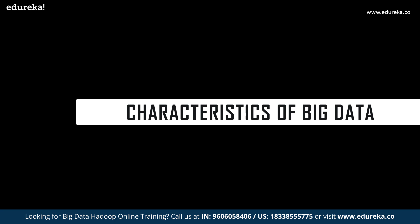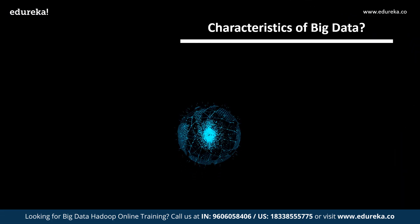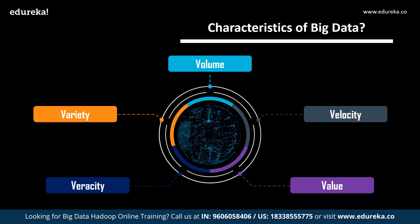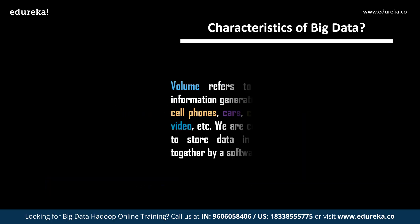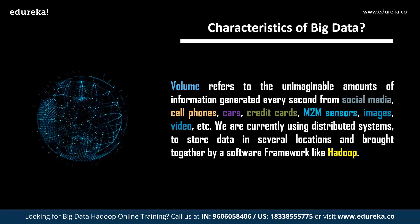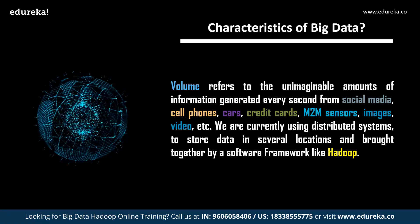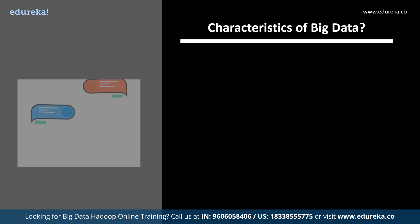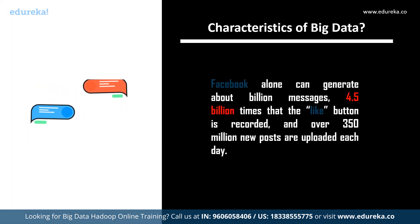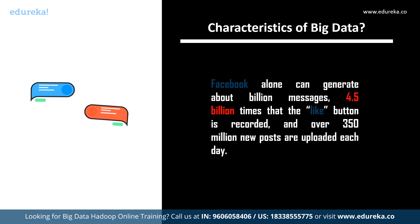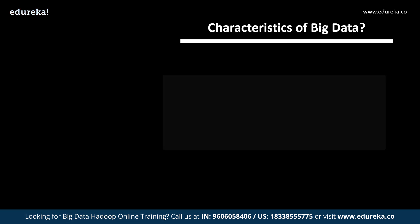Now we move into today's main topic — the characteristics of big data, known as the five V's. As data evolves, so do the V's. First is volume: volume refers to the unimaginable amounts of information generated every second from social media, cell phones, cars, credit cards, M2M sensors, images, videos, and more. We use distributed systems to store data across several locations, bringing them together via frameworks like Hadoop. Facebook alone generates billions of messages, 4.5 billion likes, and over 350 million new posts every day.